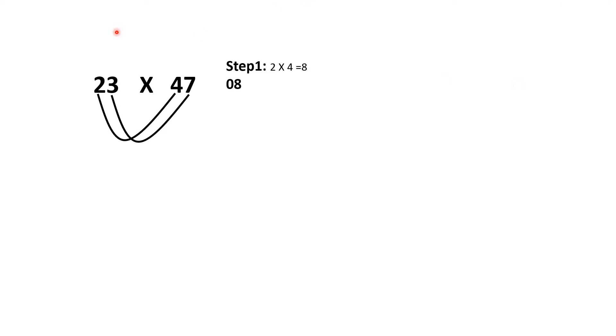Then 3 into 7. That is my step 2. I will do 3 into 7. Unit digit into unit digit. So that is 21. Now, these two portions. 0, 8, 2, 1. Like this, I will store in my mind.